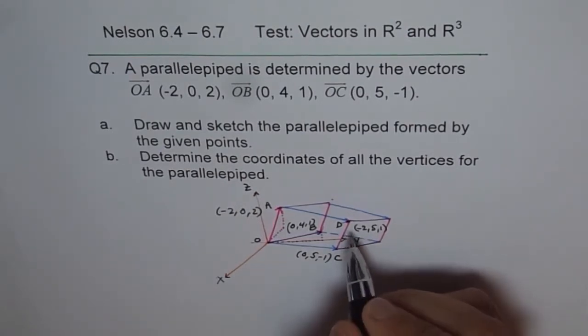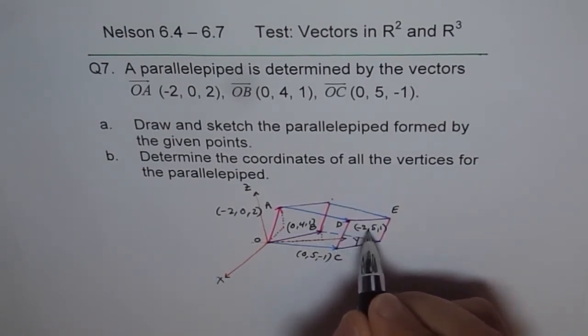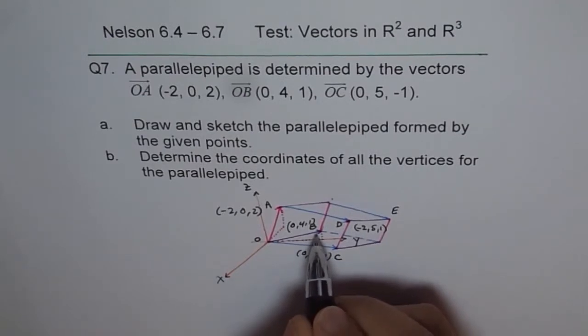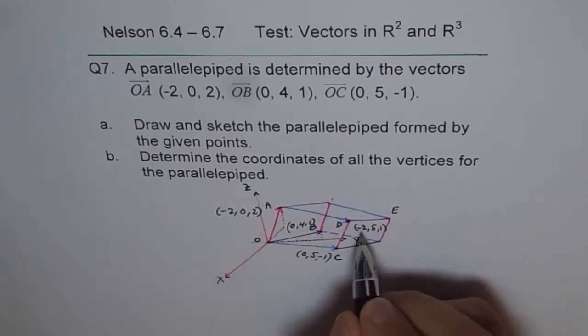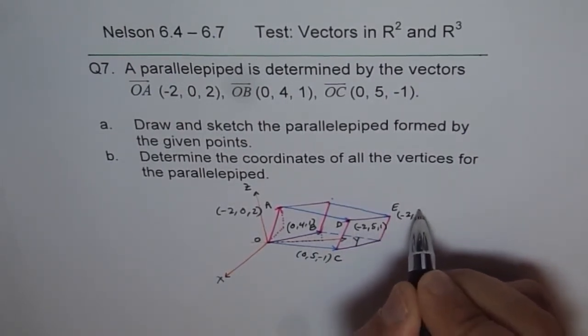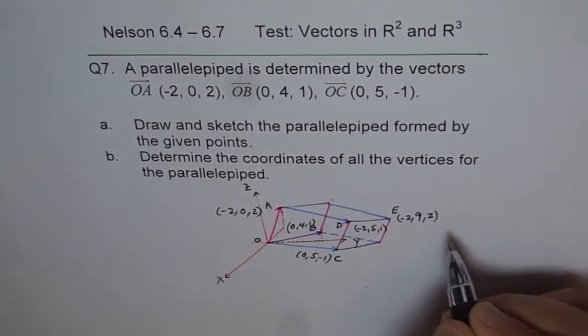Now, if I have to get from D to E, I already know D. Going this way means adding OB. OB is (0, 4, 1). Let us add (0, 4, 1) to it. So we get E. If I add 0, I get -2. 4 plus 5 is 9, and 1 plus 1 is 2. So E is (-2, 9, 2).